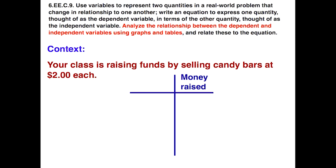Now let's use a table for this. Money raised, dependent variable, that's your Y. Quantity sold, that's our independent variable, which would be our X value. Now let's just try some numbers. If we didn't sell anything, we didn't raise any money. If we sold one bar, that would raise $2. Two bars would raise $4. Three would result with $6 and so forth.